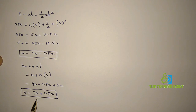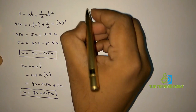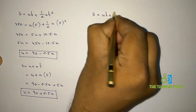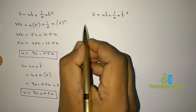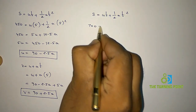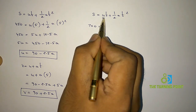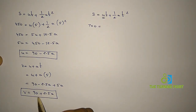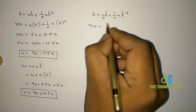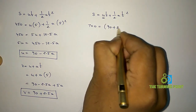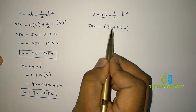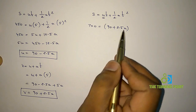This final velocity will become the initial velocity for the second interval. In the second interval, the distance covered is 700 meters. Applying s = ut + ½at² again, the initial velocity for the second case is 90 + 2.5a, and the time interval is again 5 seconds.